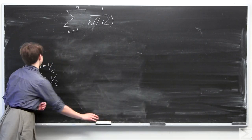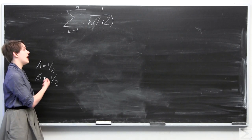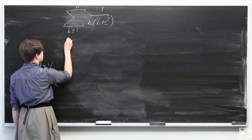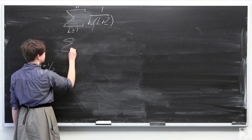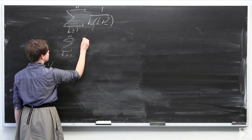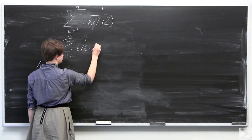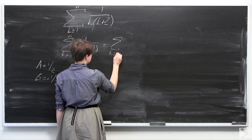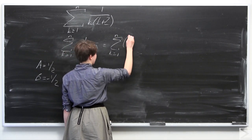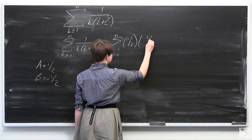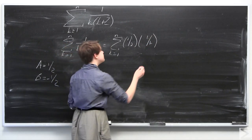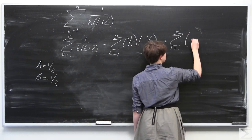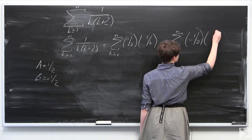Now plugging a equals 1 half and b equals negative 1 half back into our partial fractions, the sum from k equals 1 to n of 1 over k times k plus 2 equals the sum from k equals 1 to n of 1 half times 1 over k, plus the sum from k equals 1 to n of negative 1 half times 1 over k plus 2.